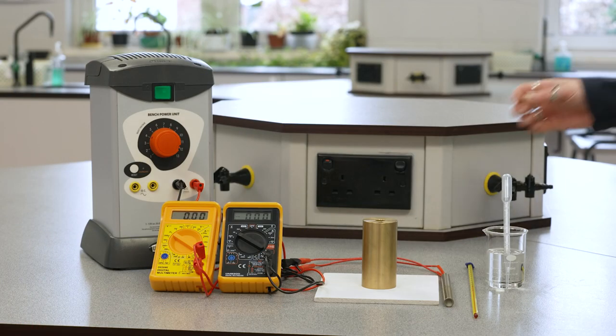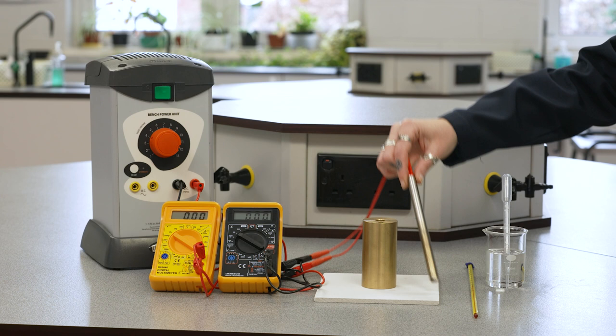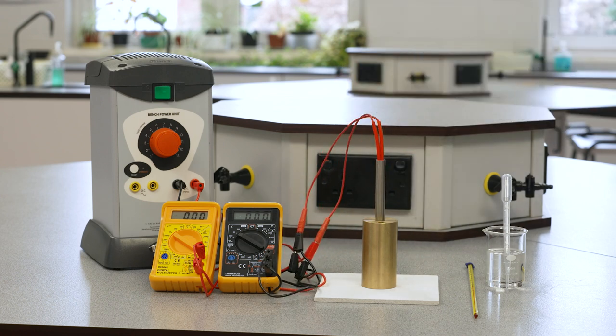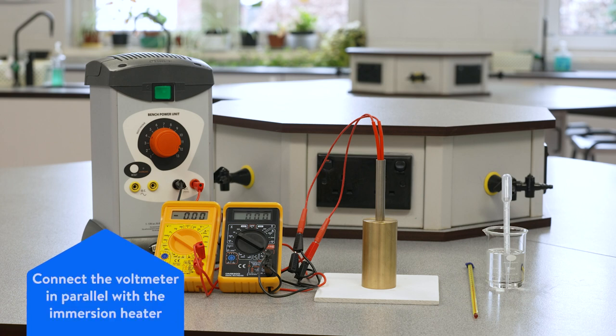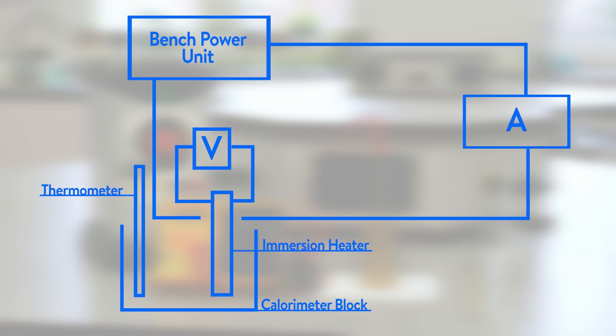Insert the immersion heater into the larger hole in the top of the calorimeter and place the calorimeter on the heatproof mat. Connect the immersion heater and the ammeter in series with the power supply. Connect the voltmeter in parallel with the immersion heater. Your circuit should look something like this.